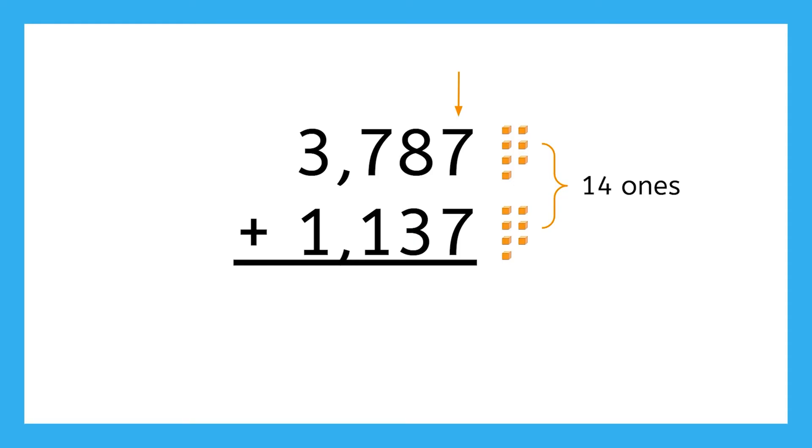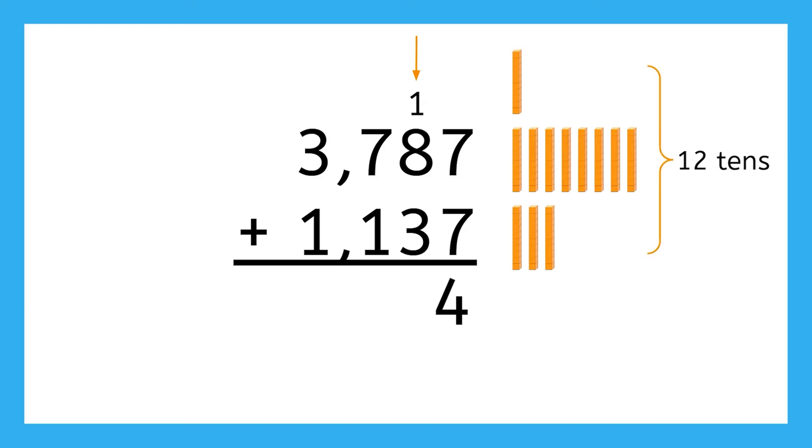With our fourteen ones regrouped as one ten and four ones, we could take that one ten and put it with our other tens. That leaves us with four ones, or the digit four, to record in the ones place of our answer. Moving on to the tens place, we have the one ten we regrouped, plus eight tens, plus three tens. That equals twelve tens. That's the same two-digit problem we ran into with our ones place answer.